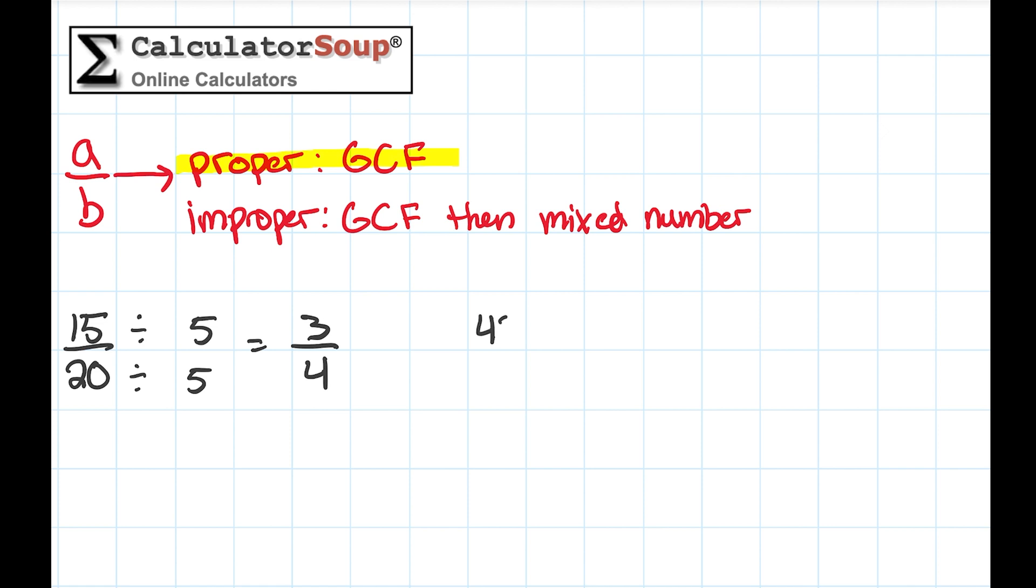Next, let's simplify the fraction 42 forty-ninths. In this example, 7 is the GCF of 42 and 49. Divide 42 by 7 to get 6, and divide 49 by 7 to get 7. Our simplified fraction is 6 sevenths.